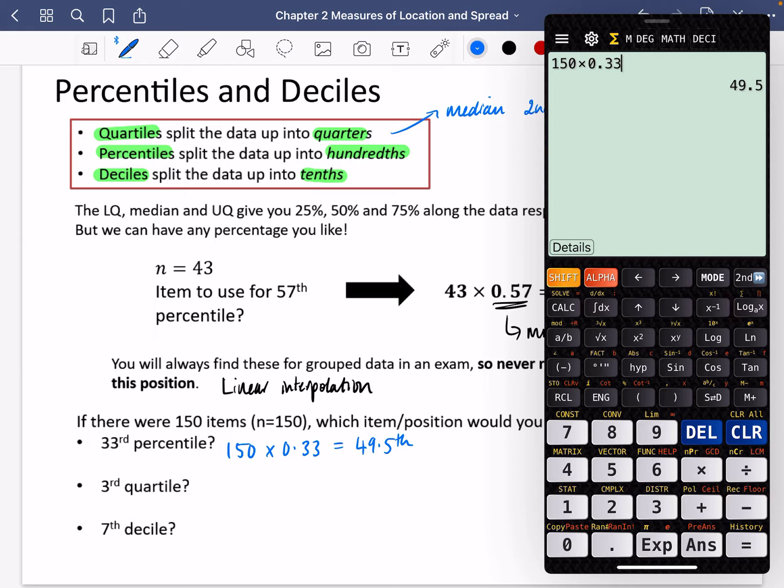The third quartile: we could either do three quarters of 150, or we know that really we could just find 75% of it. I don't really mind which calculation you do, but it's going to end up with the same thing. The third quartile, also known as the upper quartile, is going to be the 112.5th position.